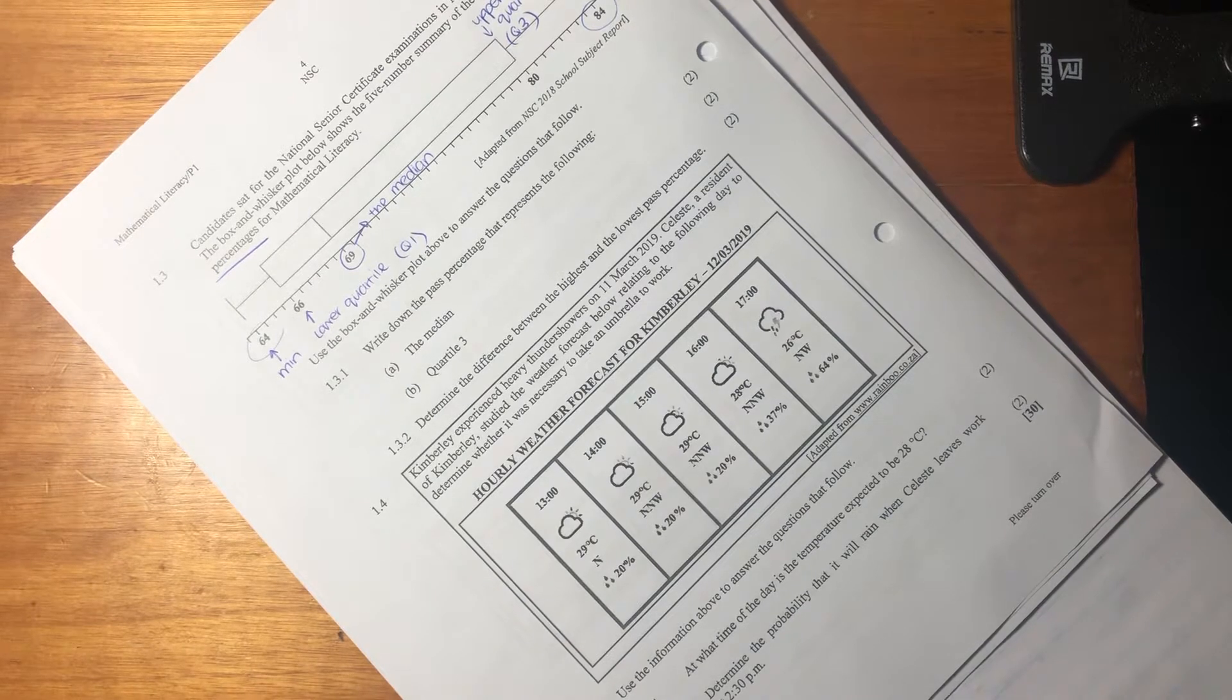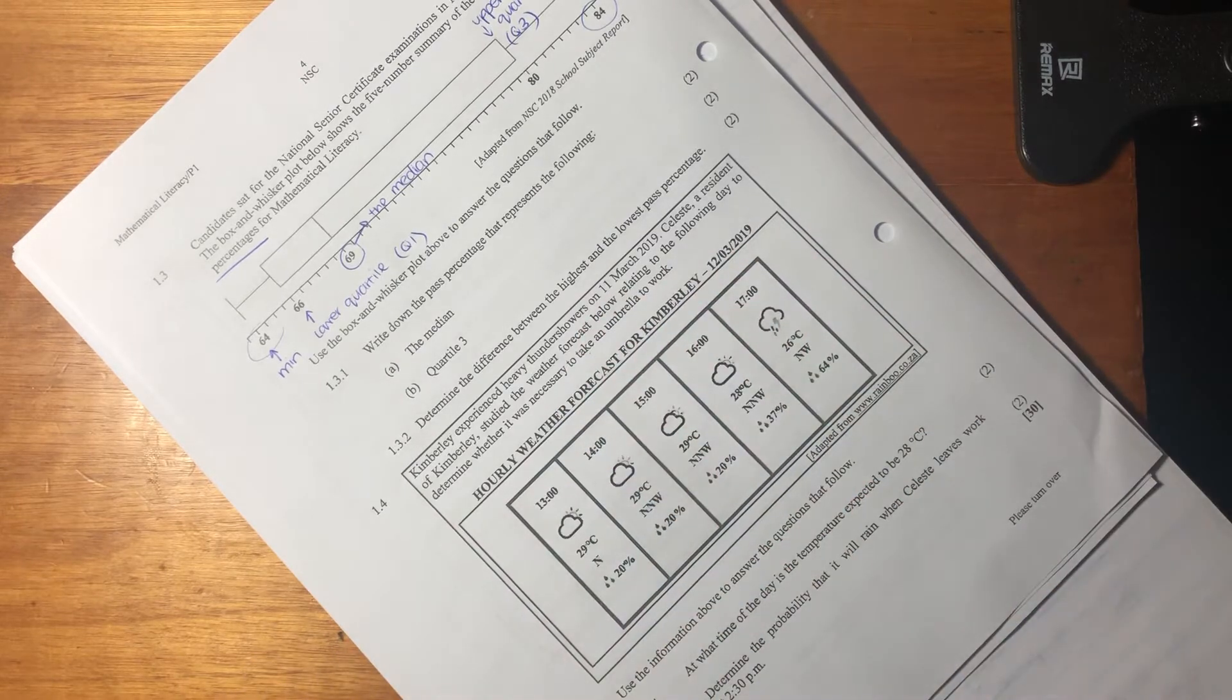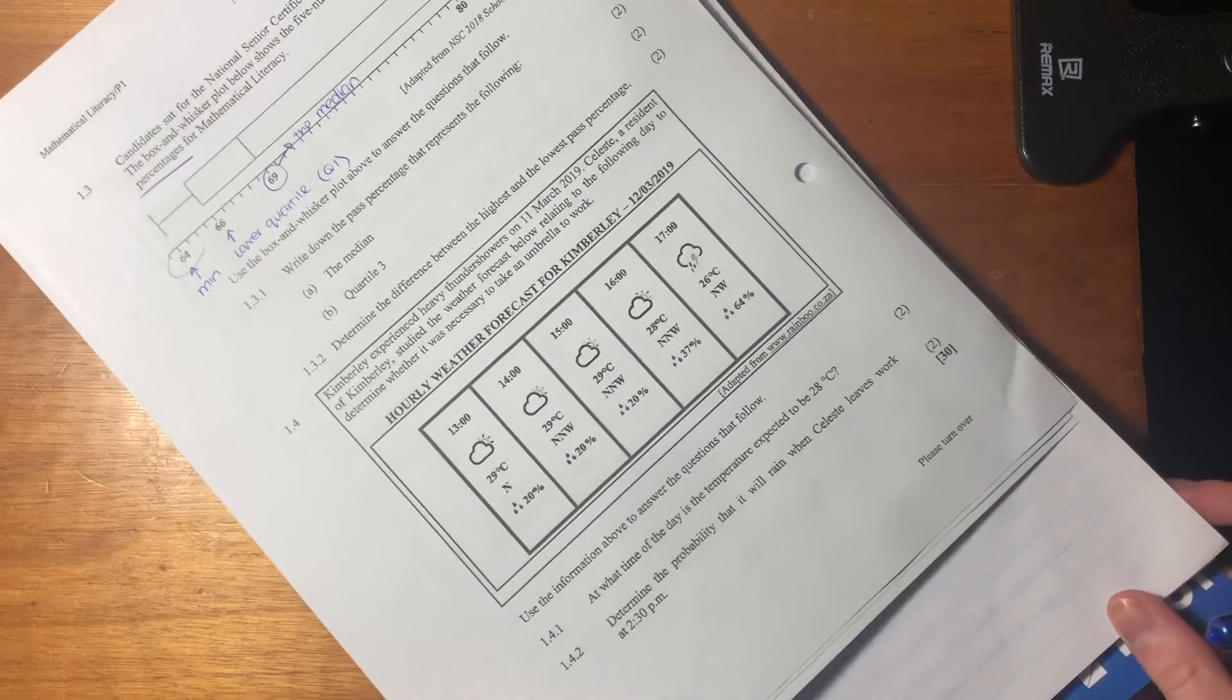Kimberly experienced heavy thunderstorms on the 11th of March 2019. Celeste, a resident of Kimberly, studied the weather forecast below relating to the following day to determine whether it was necessary to take an umbrella to work. Fair enough, she doesn't want to get wet.